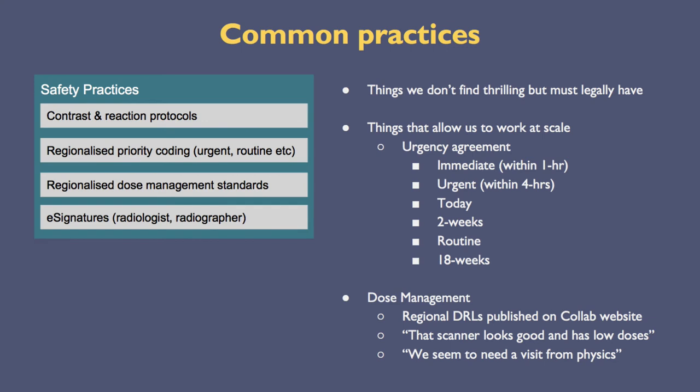We also need to think about working at scale together — we all need to agree what 'urgent' means. Regionalised dose management is another thing which could be taken off each trust's hands. We already often share the physics teams, and to some extent they're doing that for us already. We could actually publish the DRLs for the region, and if you're a slight outlier, you might realise you need a visit from physics. Or when you're buying a new scanner, you could ask which one gives the best compromise of image quality and dose.